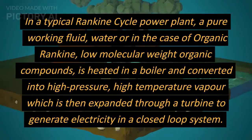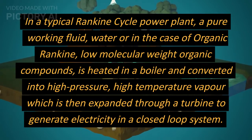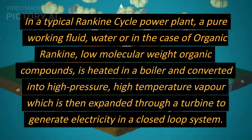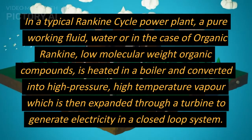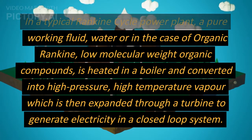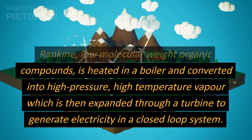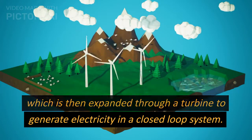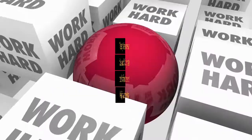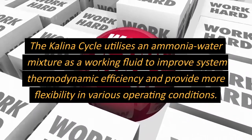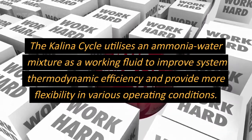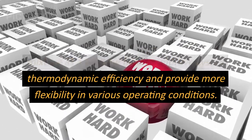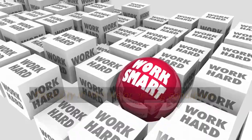In a typical Rankine Cycle power plant, a pure working fluid — water, or in the case of organic Rankine, low molecular weight organic compounds — is heated in a boiler and converted into high-pressure, high-temperature vapour, which is then expanded through a turbine to generate electricity in a closed-loop system. The Kalina Cycle utilizes an ammonia-water mixture as a working fluid to improve system thermodynamic efficiency and provide more flexibility in various operating conditions.